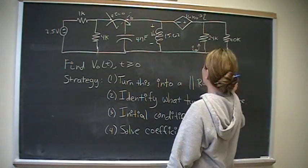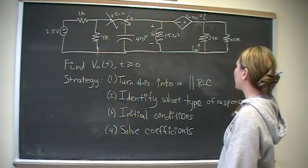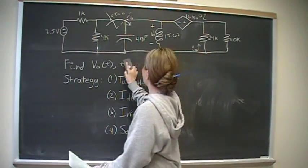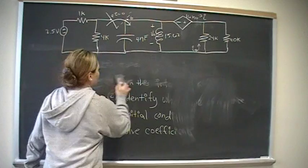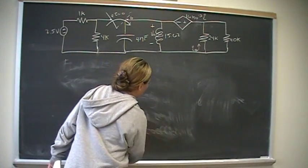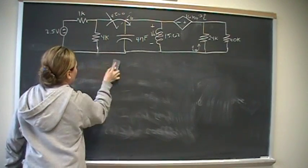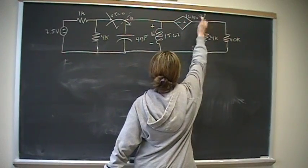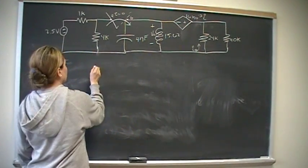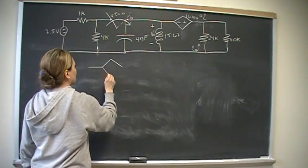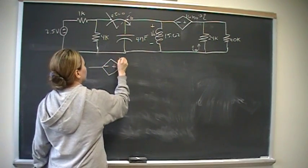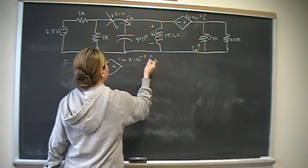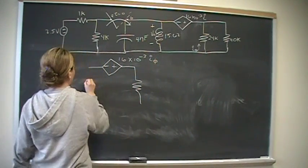Okay, so the first thing we're going to do is turn this into a parallel RLC circuit. Okay, so we have something here that doesn't look like a resistor, but has an equivalent resistance. So let's do this. Take a look at that part of the circuit. Okay, minus plus 16 times 10 to the minus 3, I sub 3.